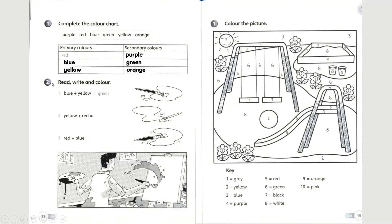Activity number two: read, write, and color. You will need to color this later. Look at number one — blue plus yellow equals green. In other words, if you mix blue and yellow, you will get green. Since the answer is green, you will have to color this brush green. You can pause the video and write the answers by yourself.